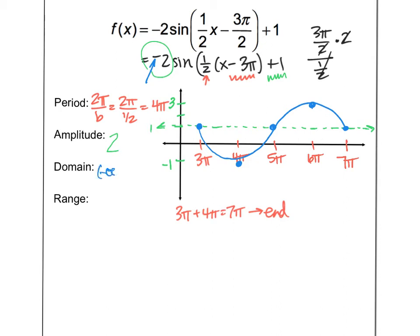My domain, negative infinity to infinity. All reals, all the time. That's always going to be the case for sine and cosine functions. And then my range is going to be from negative one to three. So that is the first example.